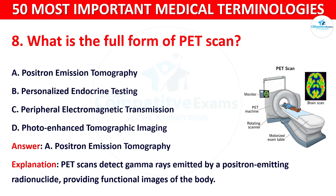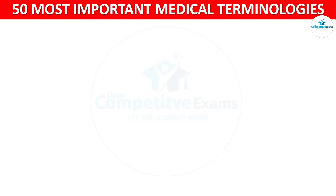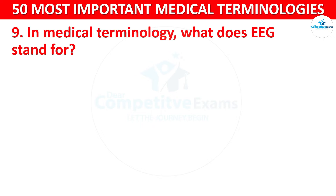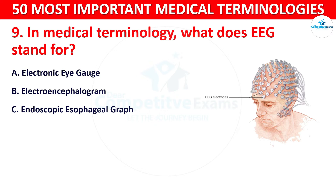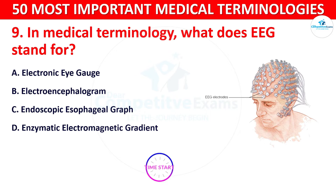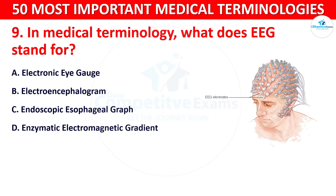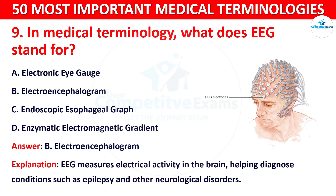Question number 9: In medical terminology, what does EEG stand for? Your options are: A) Electronic Eye Gauge, B) Electroencephalogram, C) Endoscopic Esophageal Graph, or D) Enzymatic Electromagnetic Gradient. The correct answer is B, Electroencephalogram. EEG measures electrical activity in the brain, helping diagnose conditions such as epilepsy and other neurological disorders.